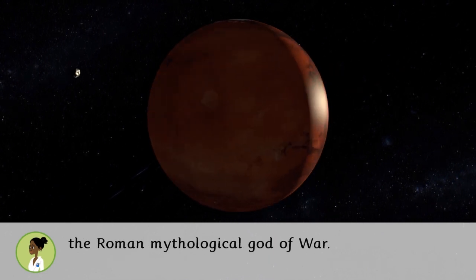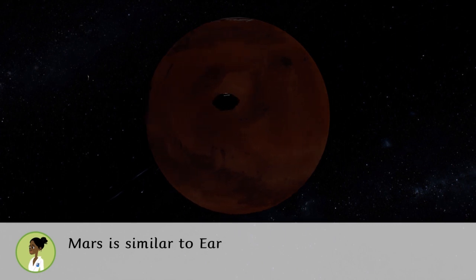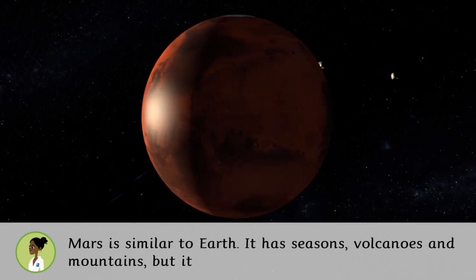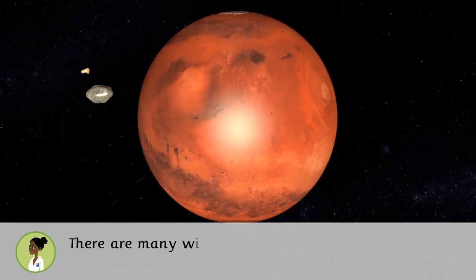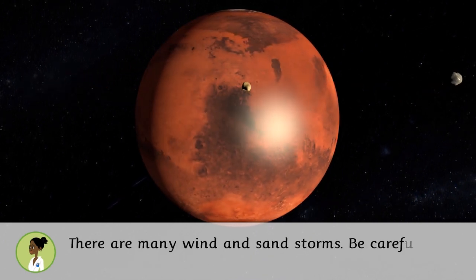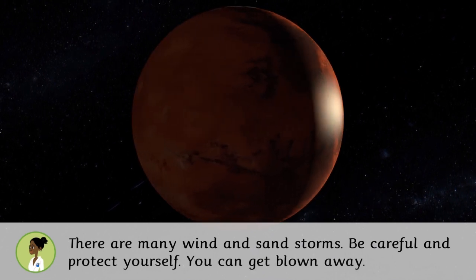Mars is similar to Earth. It has seasons, volcanoes, and mountains, but it is smaller and it doesn't have water. There are many wind and sand storms. Be careful and protect yourself, you can get blown away.